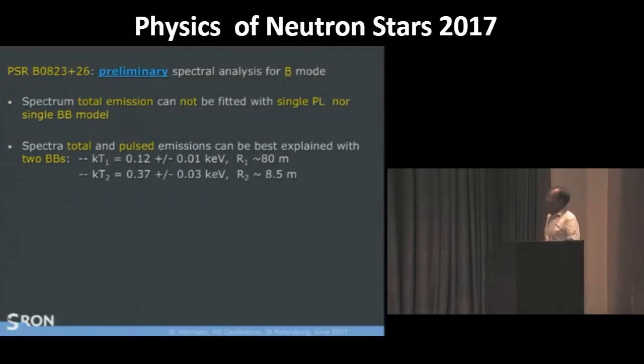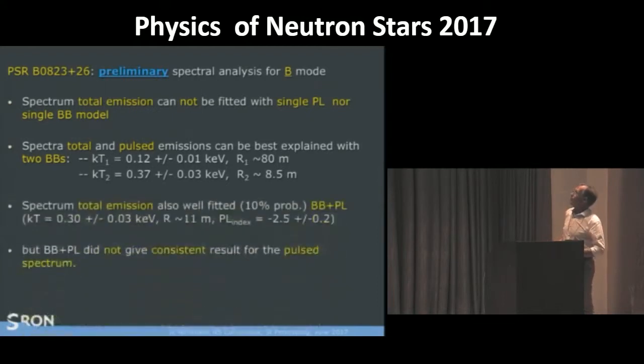What I must say, that's why I say it's preliminary. The total emission, we can also fit with a 10% probability plus a blackbody plus power law. With this temperature, 0.3 keV. Small radius, and the index of minus 2.5. However, in this case, we get exactly the same values for the total, and when we take just the pulsed emissions. In this case, when we fit the pulsed emission, it is not consistent. And this we have to study in a little bit more detail.